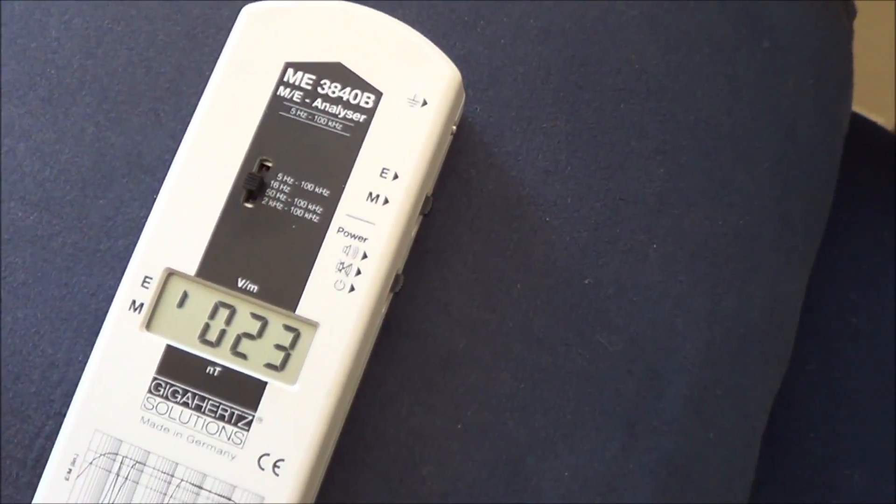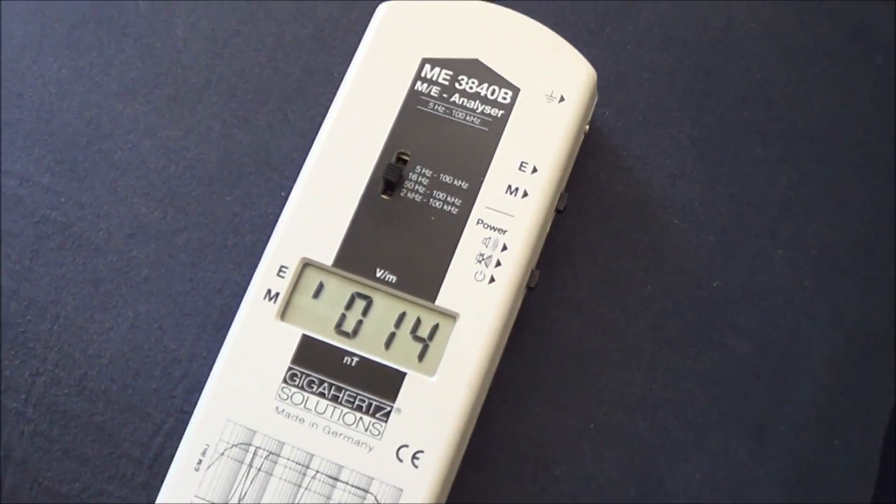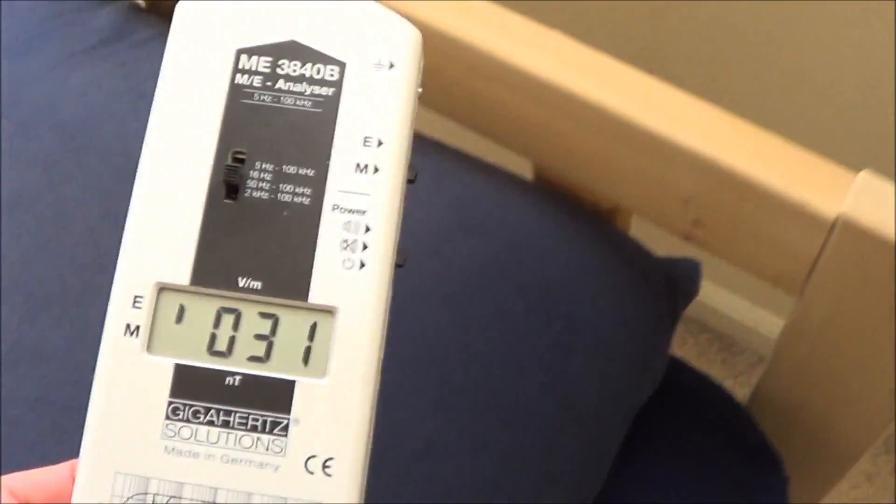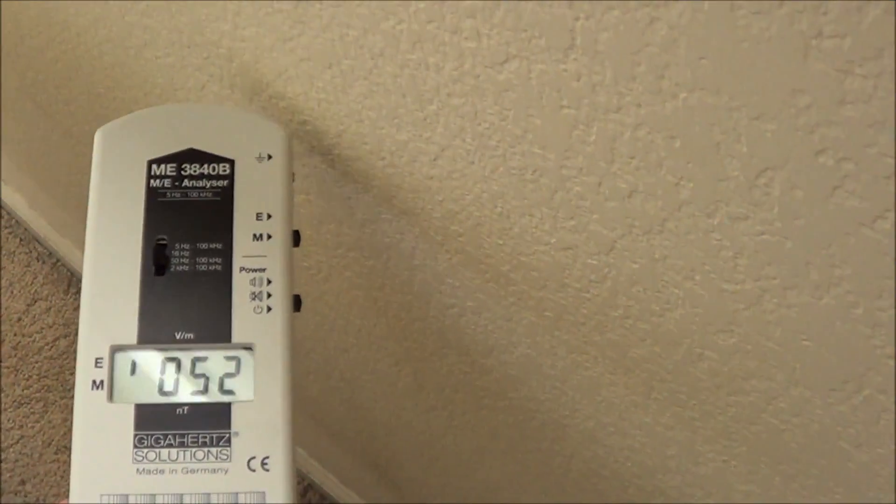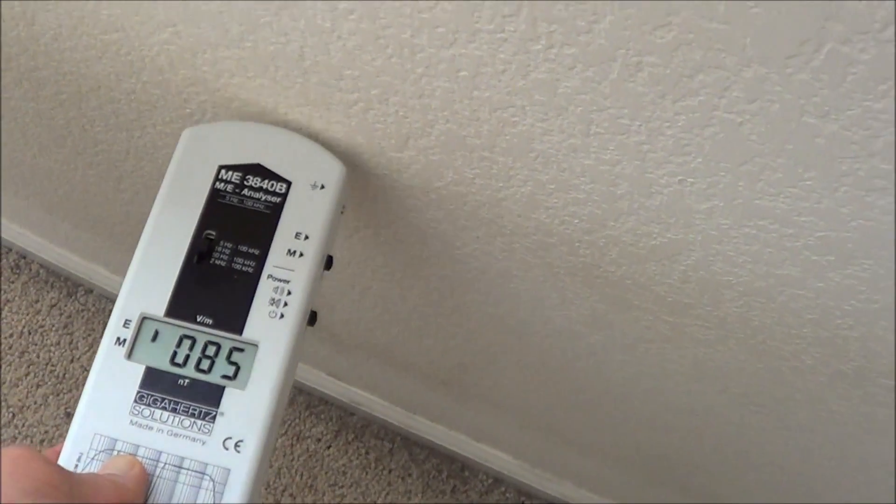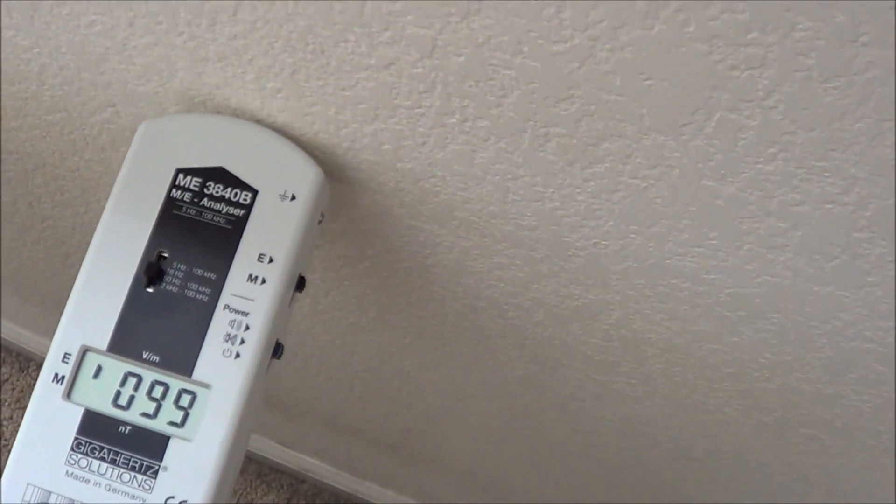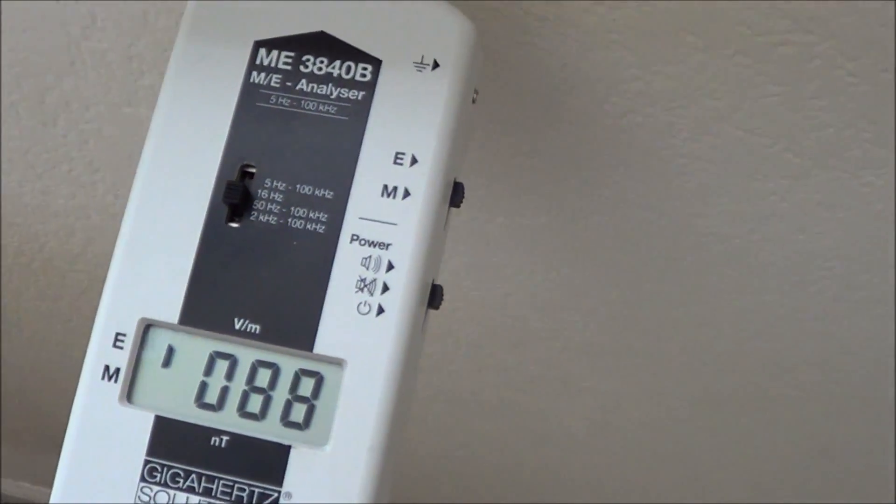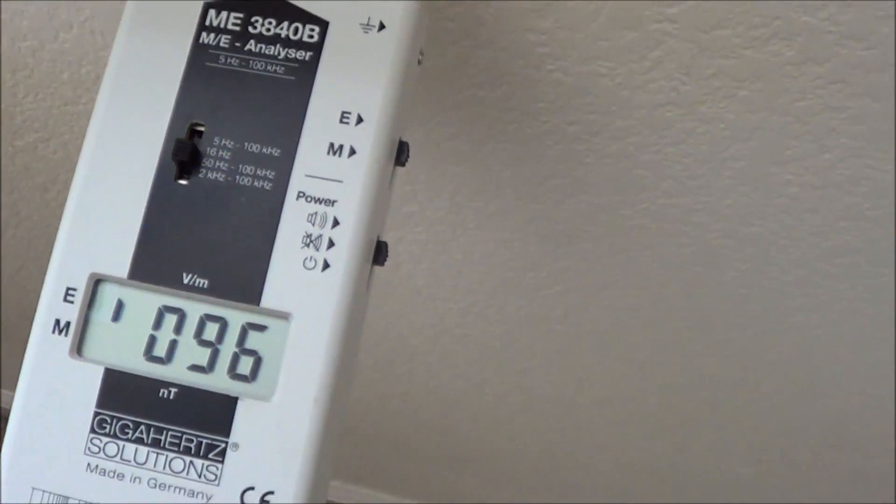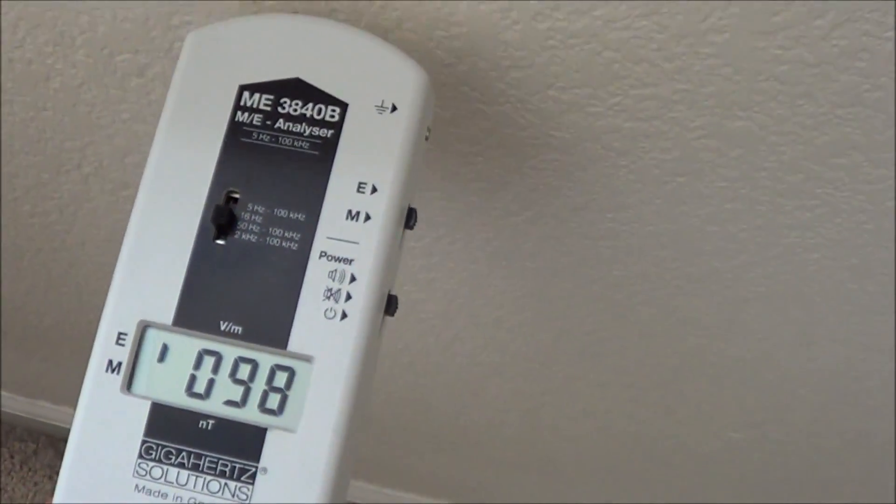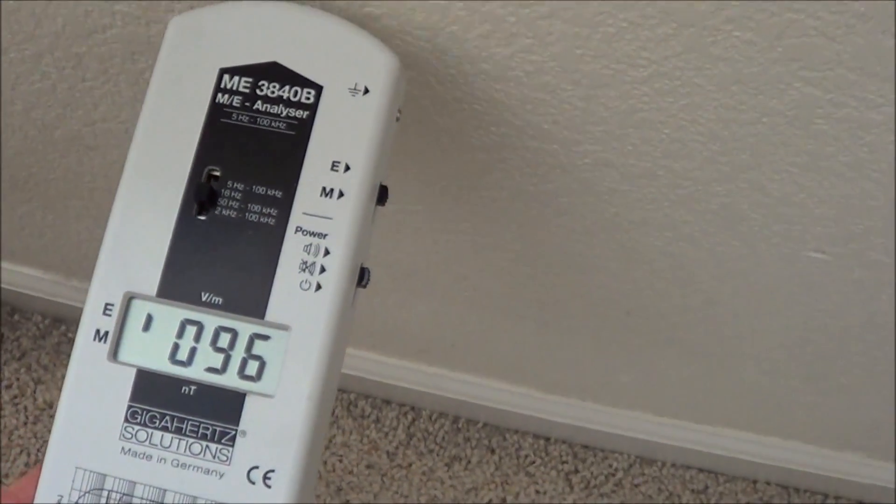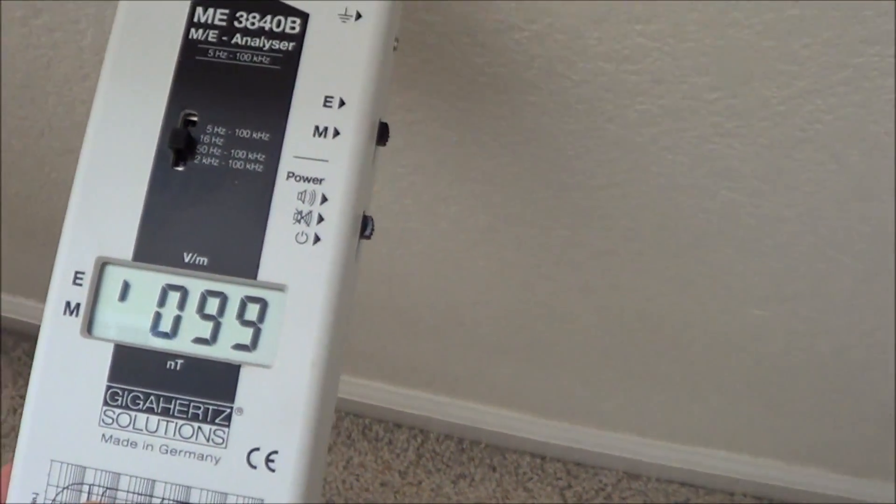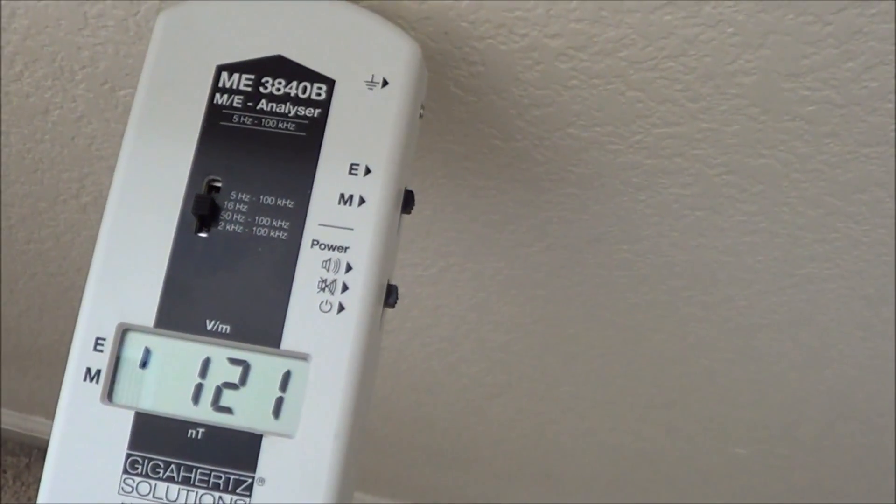And this will be true for any wall in your house where there's electric wires running through it. So once again, where there are electric wires running through the wall, there will be an electric field. And you can trace the wires using a meter like this. You can see just about where they are by how high the reading is.